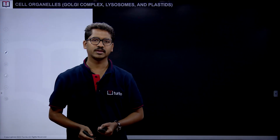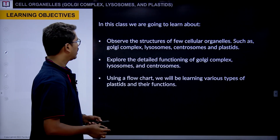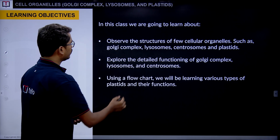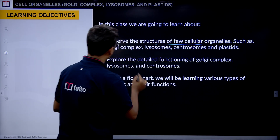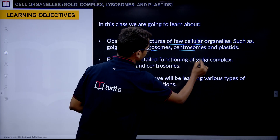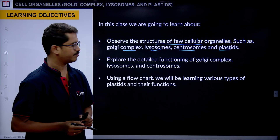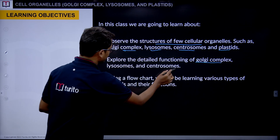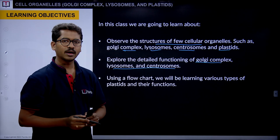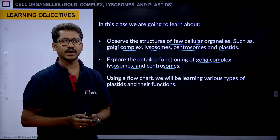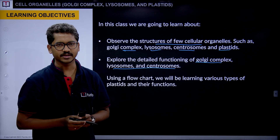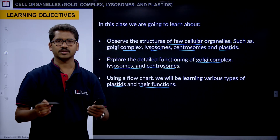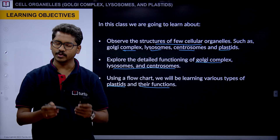Using these topics, we will build an understanding. Before going into those topics, let me outline what we'll cover in this session. We will observe structures such as the Golgi complex, lysosomes, centrosomes, and a detailed understanding of plastids. We will also explore the functions of all these organelles, look at a flowchart showing the classification of plastids, and then go through the functions of plastids.